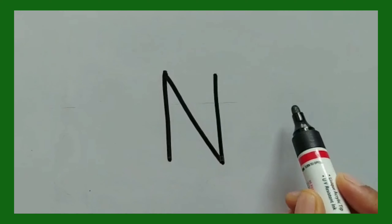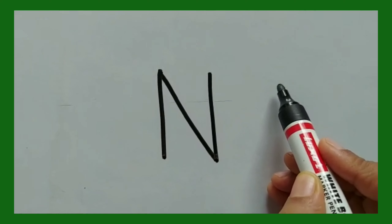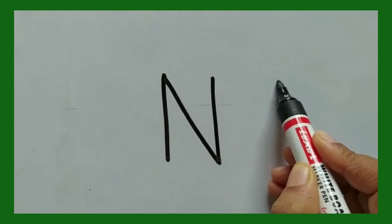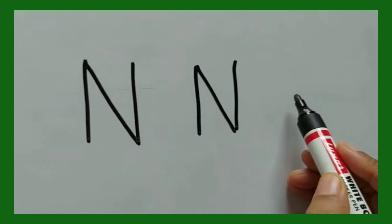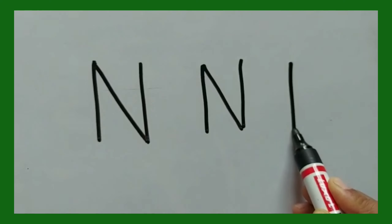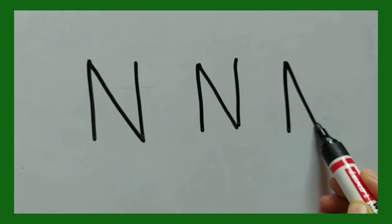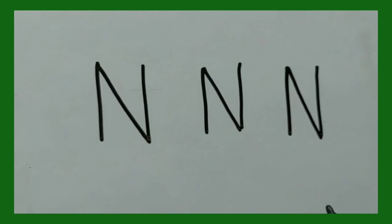Say the word, children: N. So first let us learn to write, and then we will see what are the things that begin with this letter. So make a standing line, left slanting line, and then a standing line. Letter N. Practice in your rough copy: standing line, left slanting line, and a standing line. Letter N.